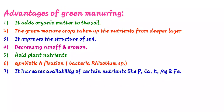Now, the advantages of green manuring. It adds organic matter to the soil, stimulates soil activity, and increases the microorganism population, enhancing their activity. Green manure crops also take up nutrients from deep soil layers, and when incorporated into the soil, they return those nutrients to the upper layer.